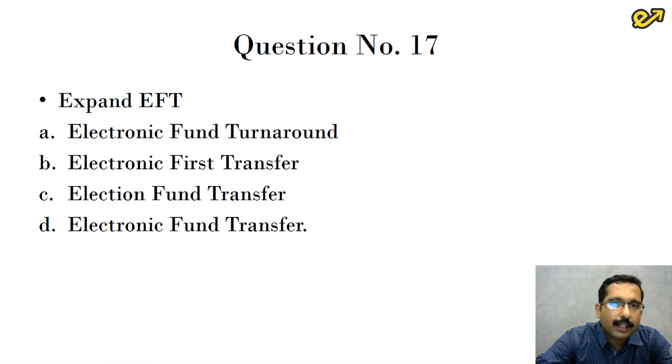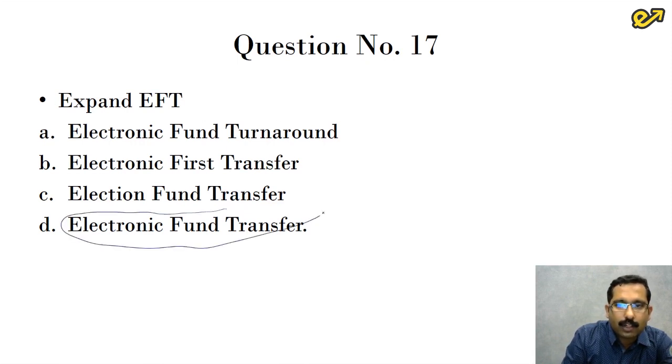Question number 17, expand EFT. Let us go from the first one, electronic fund turnaround, electronic first transfer, election fund transfer. Last one is electronic fund transfer. So the answer here is electronic fund transfer, which is option D. It is electronic fund transfer.